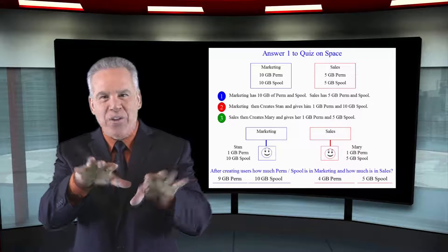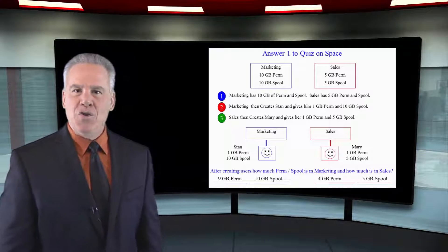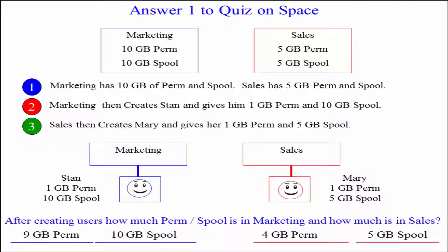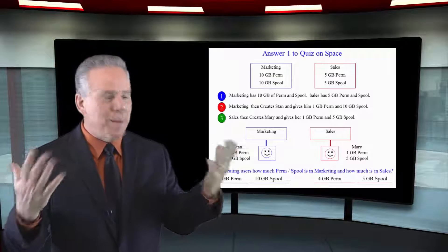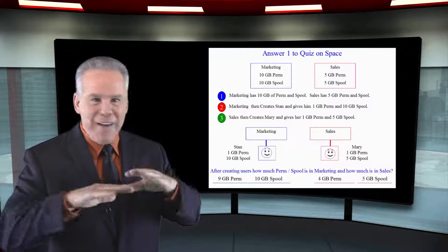You nailed it, I'll bet. Marketing now has 9 gigabytes of perm, 10 gigabytes of spool. Sales has 4 gigabytes of perm, 5 gigabytes of spool. Because each one of these gave the users they created 1 gigabyte of perm. Perm's like money - if you've got 10 gigabytes and create somebody and give them 1 gigabyte, you've lost one of them. But spool's like a speed limit. You can give that out because that's a maximum limit that everybody can travel that's under you. You don't lose anything.